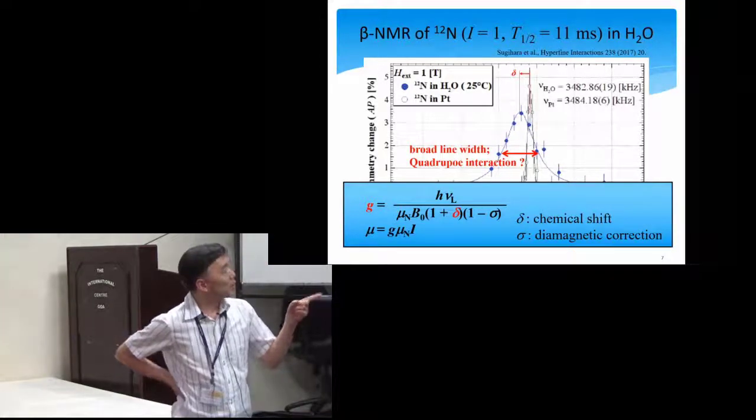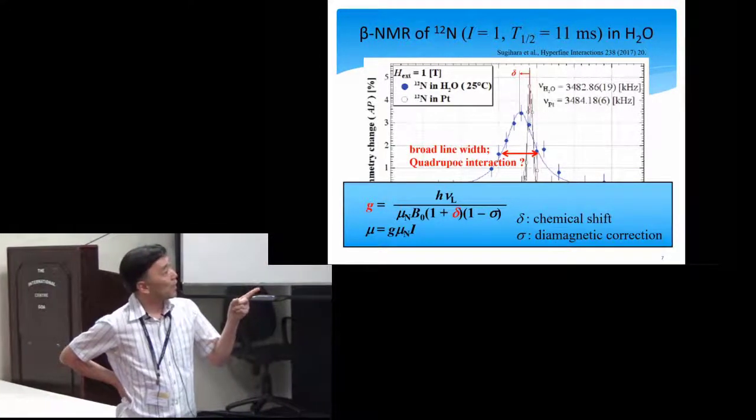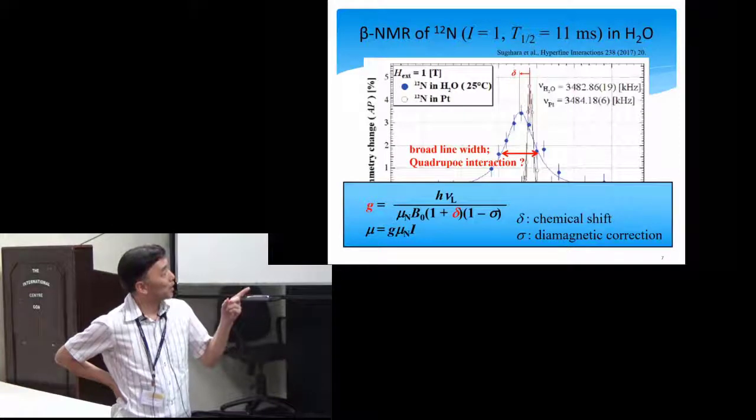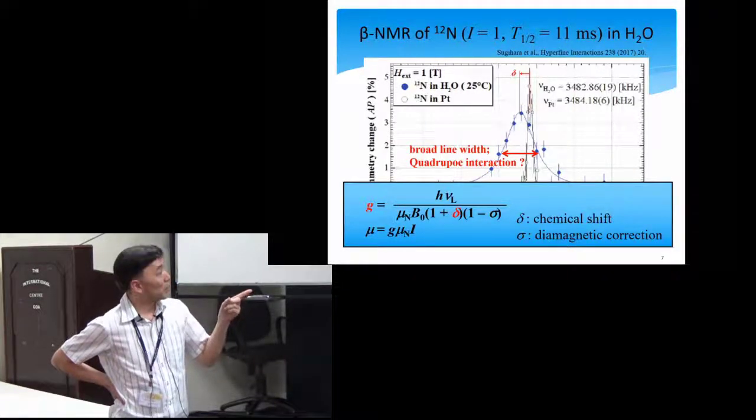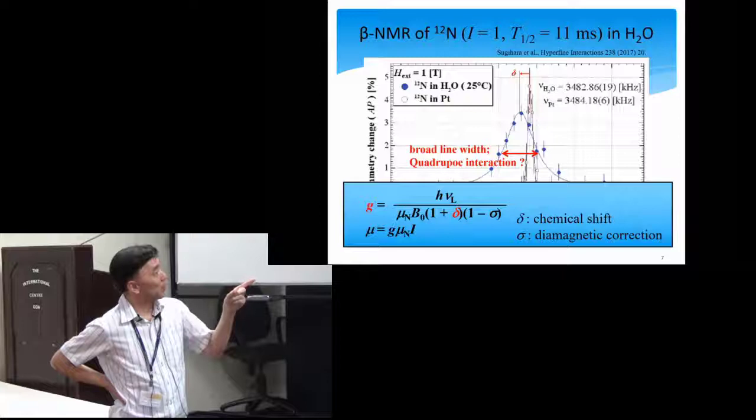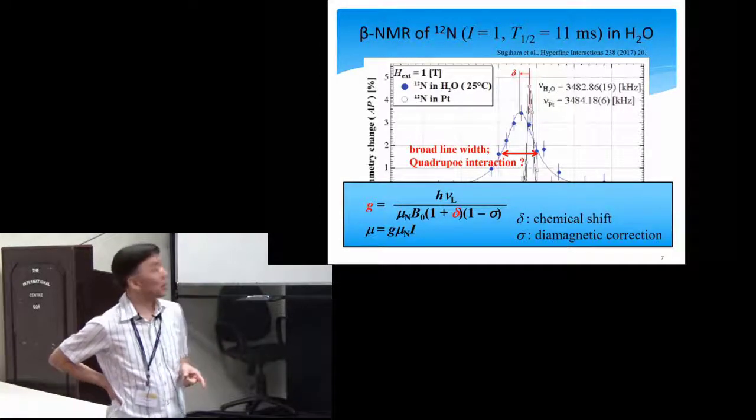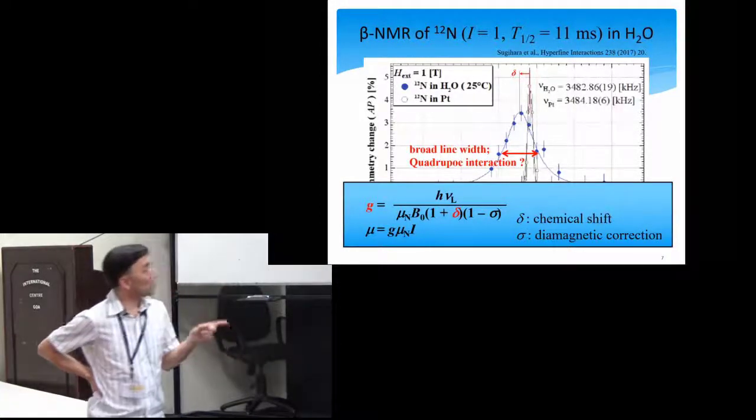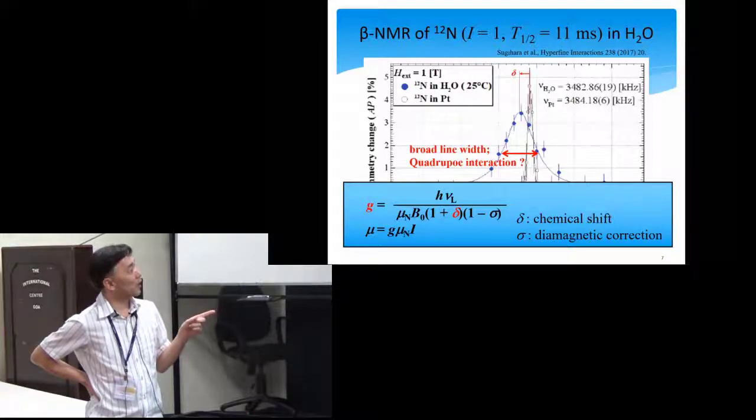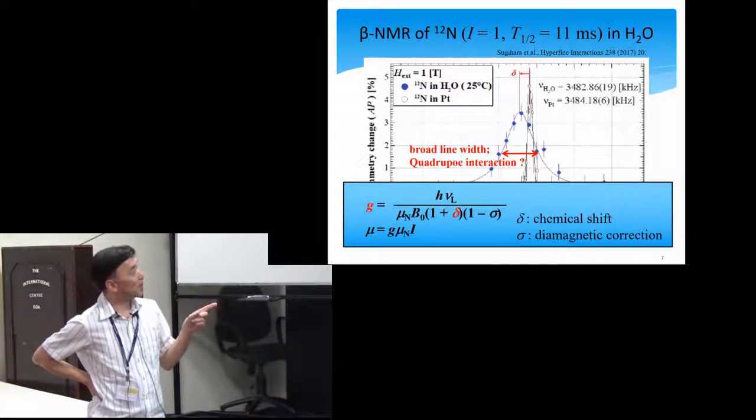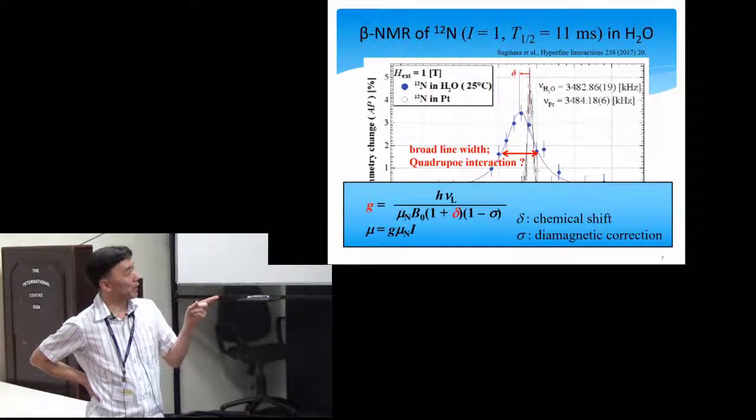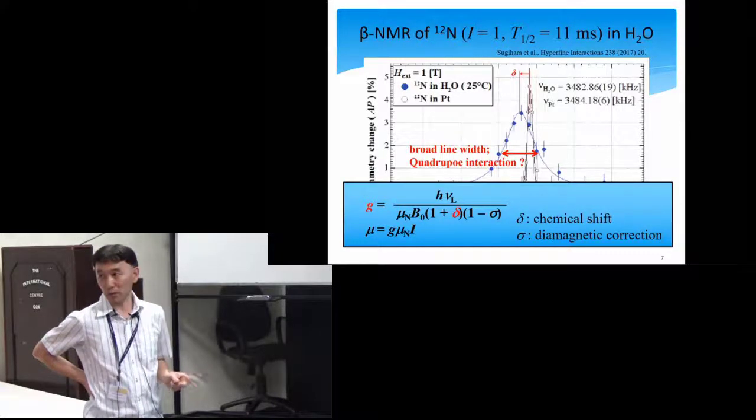If we know the precise G-factor, we can use the nucleus for the chemical shift. And also, if we have to know the precise G-factor, we need information on the chemical shift in the material.